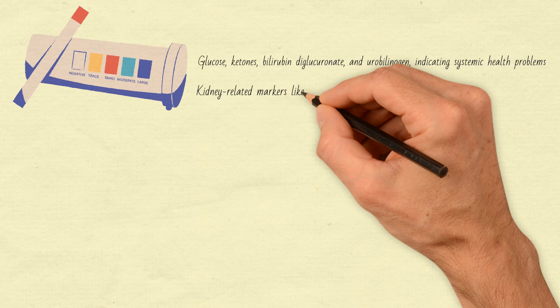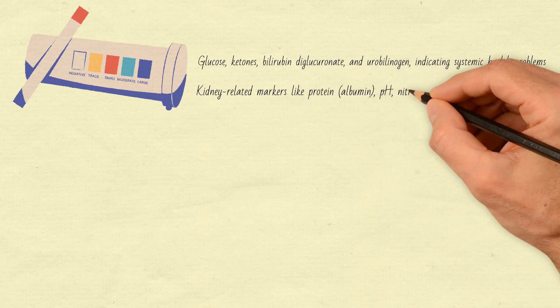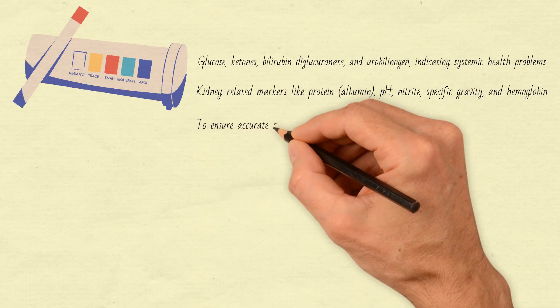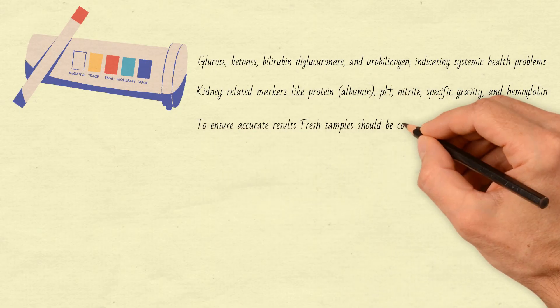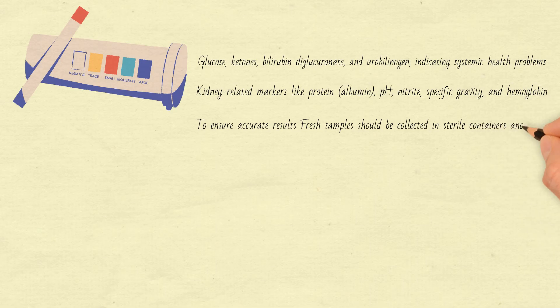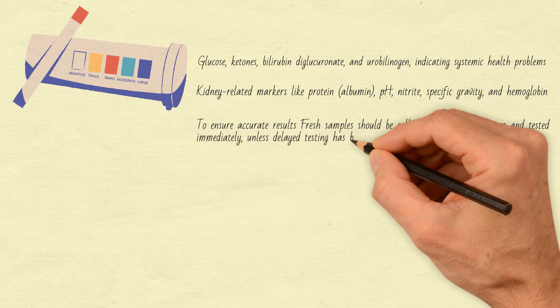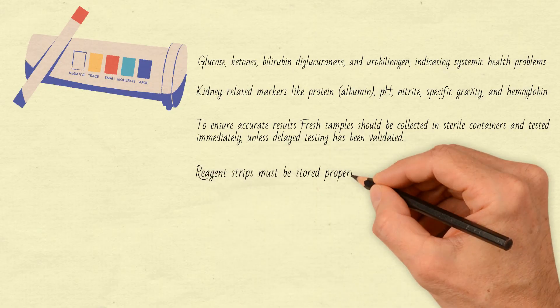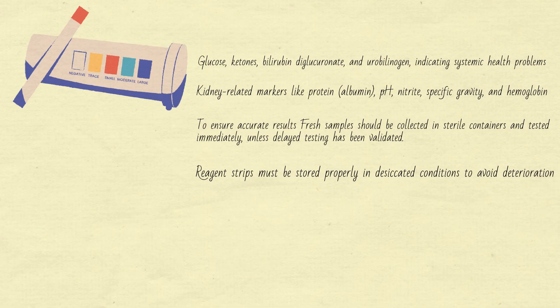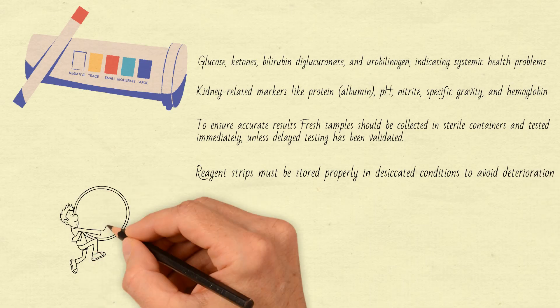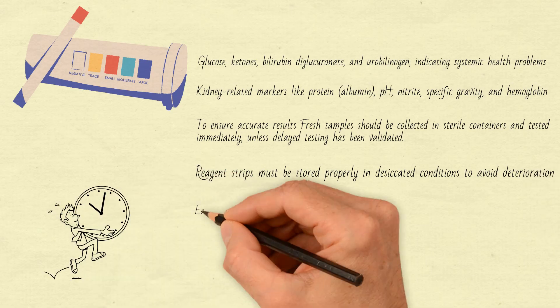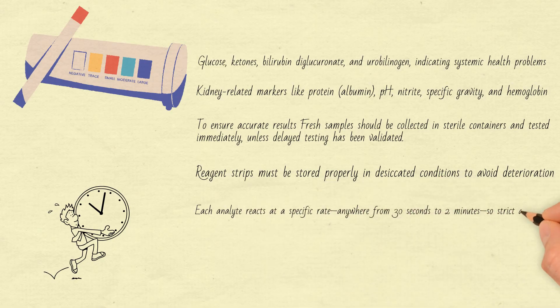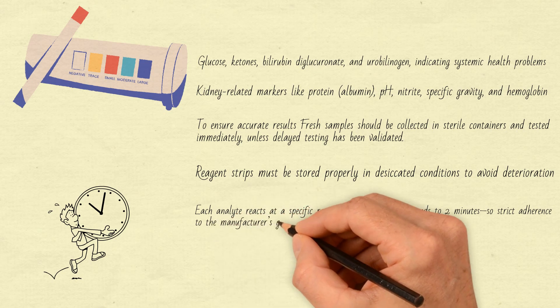Kidney-related markers like protein, albumin, pH, nitrite, specific gravity, and hemoglobin. To ensure accurate results, fresh samples should be collected in sterile containers and tested immediately, unless delayed testing has been validated. Reagent strips must be stored properly in desiccated conditions to avoid deterioration. Timing is critical. Each analyte reacts at a specific rate, anywhere from 30 seconds to 2 minutes, so strict adherence to the manufacturer's guidelines is essential.